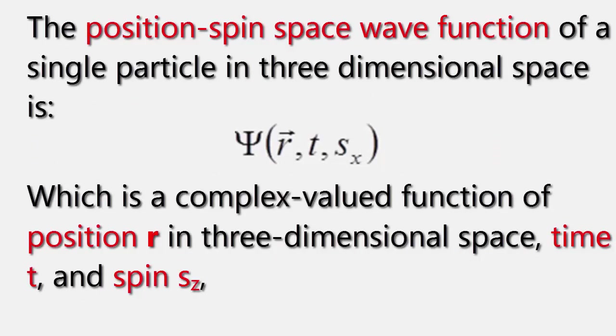The position-spin space representation of a single particle in three-dimensional space is ψ(r, t, sz), which is a complex-valued function of position r in three-dimensional space, time t, and spin sz.